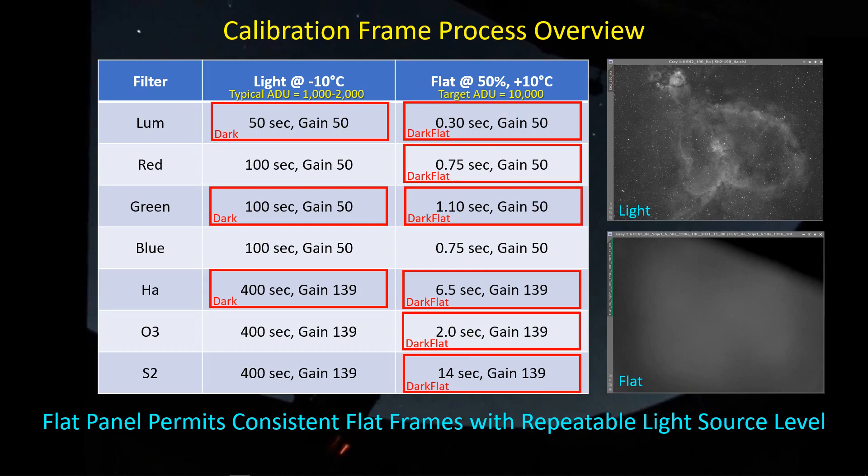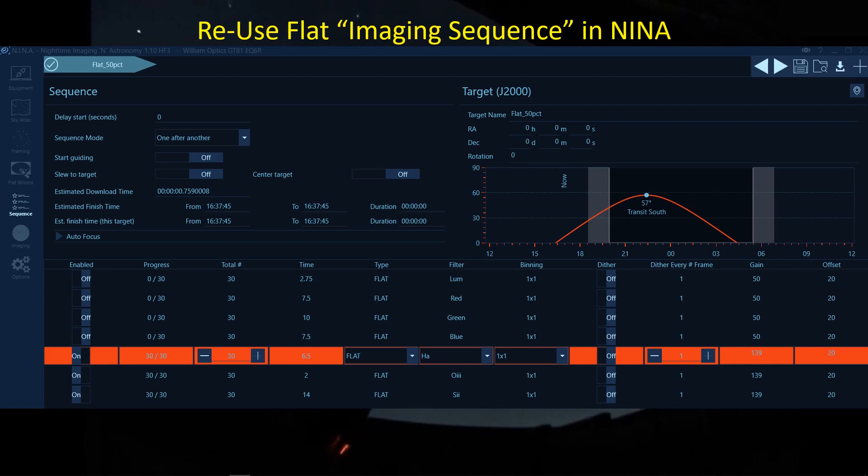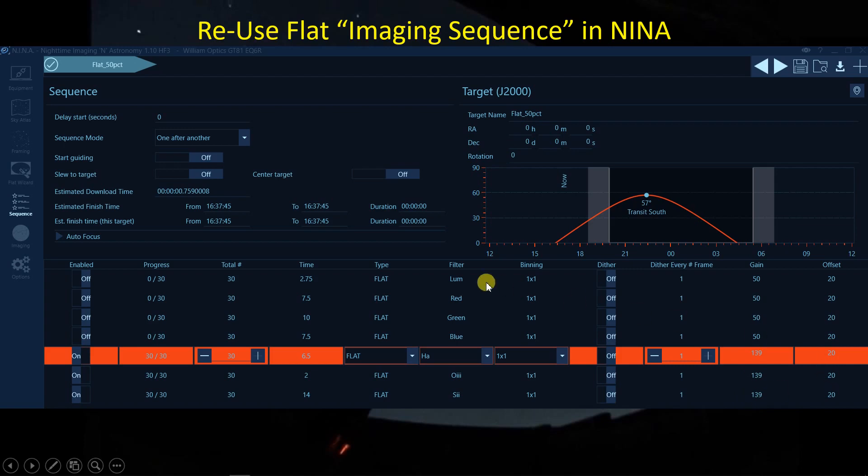I also set up a corresponding imaging sequence for flats and dark flats where each of the exposure times is entered along with the corresponding filter and the corresponding gain and offset. And one of the questions that I want to address here is that I usually take 30 frames for my darks, my dark flats, and my flats, and now I'm questioning whether or not I really need 30 frames or do I need more frames?